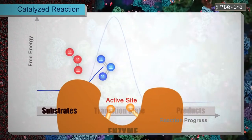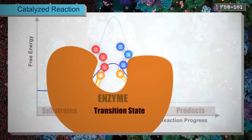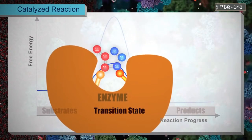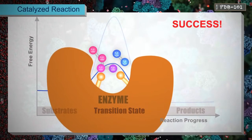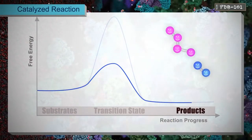An enzyme acts as a template for the reaction, binding to its substrate and holding it in the proper position to form the product. An enzyme also surrounds its substrate with reactive groups that stabilize the transition state, making it easier for the reaction to occur.